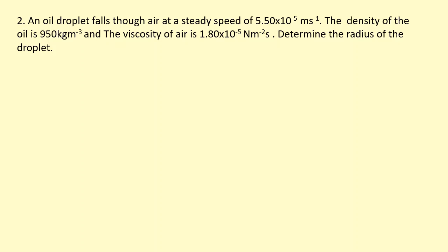An oil droplet falls through air at a steady speed of 5.5×10⁻⁵ metres per second. The density of the oil droplet is 950 kg/m³ and the viscosity is given. Determine the radius. Since it's falling at terminal velocity, it's the same situation as before: mg = F_drag.